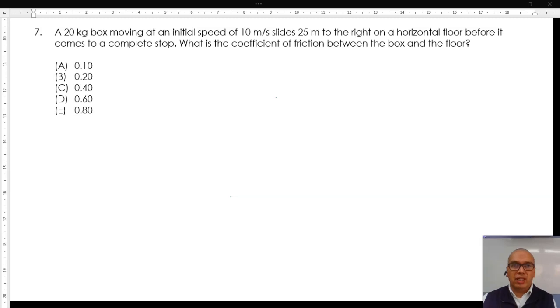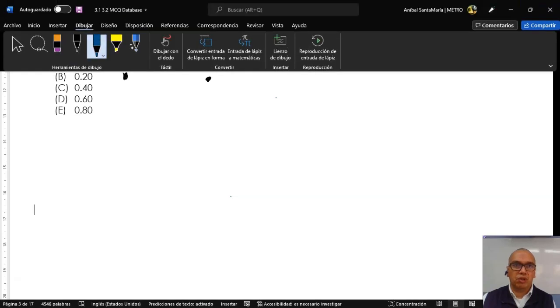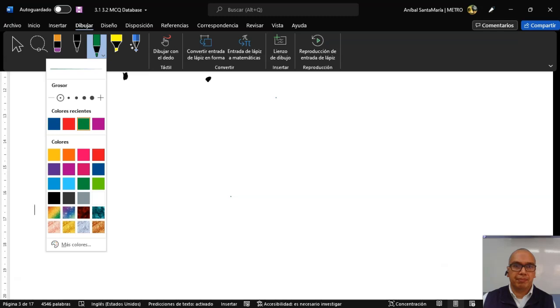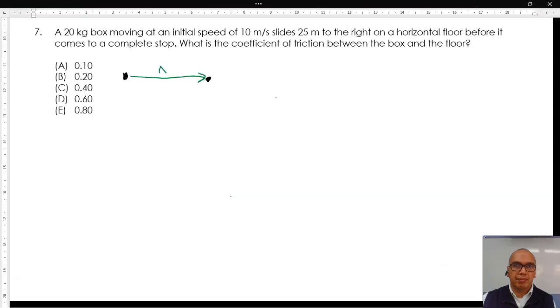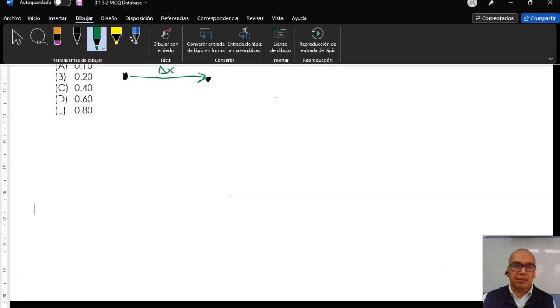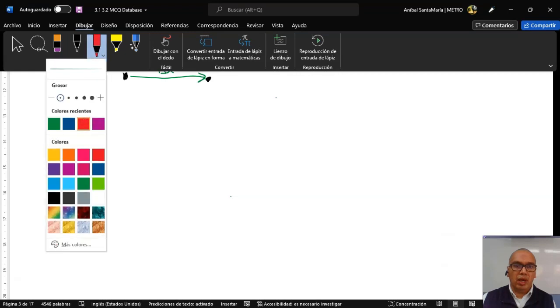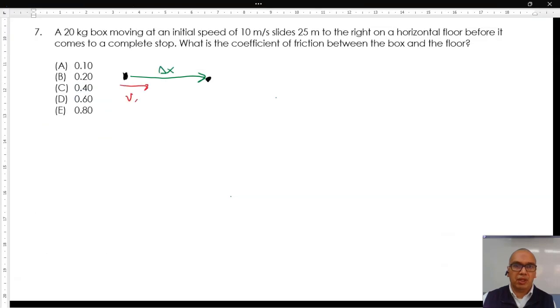7. A 20-kilogram box moving at an initial speed of 10 meters per second slides 25 meters to the right on a horizontal floor before it comes to a complete stop. What is the coefficient of friction between the box and the floor?